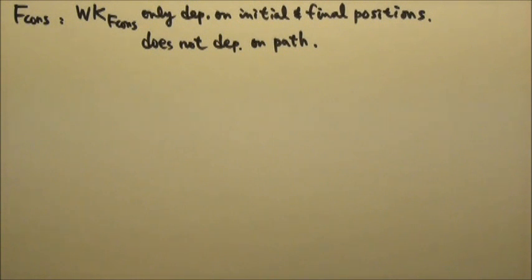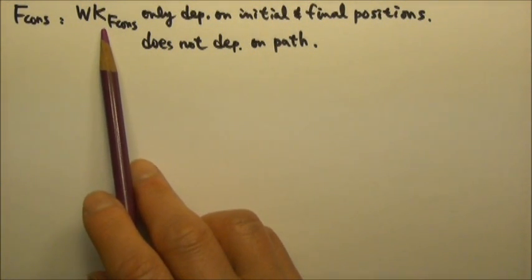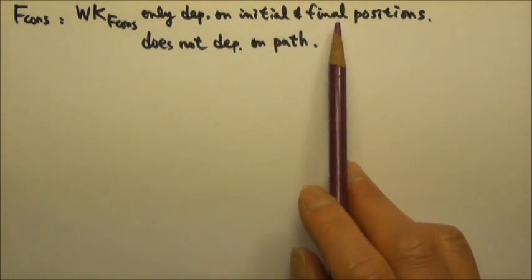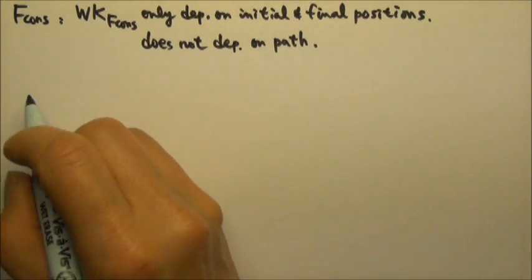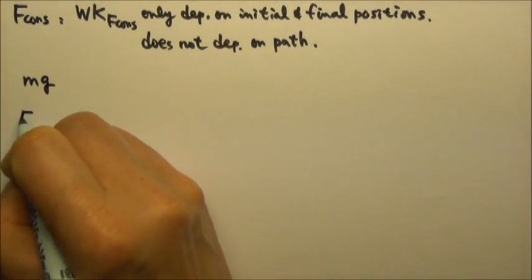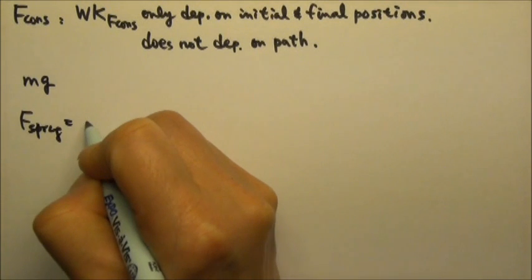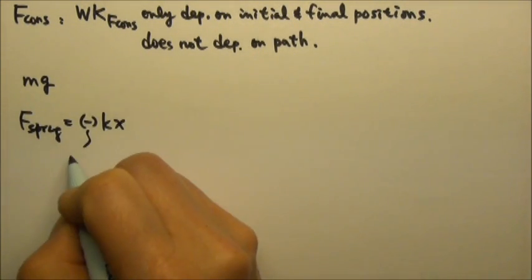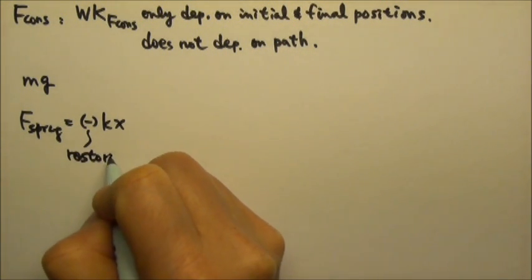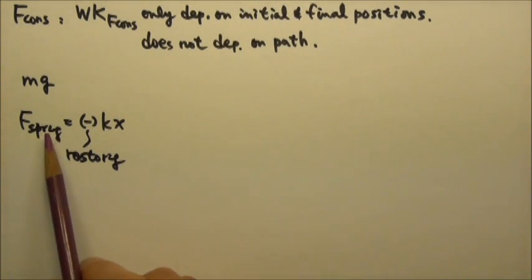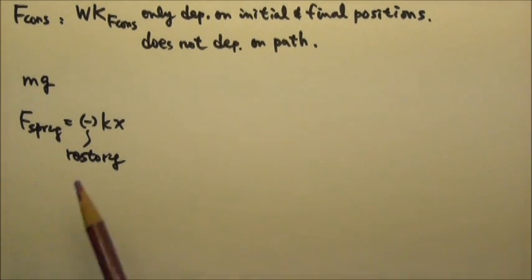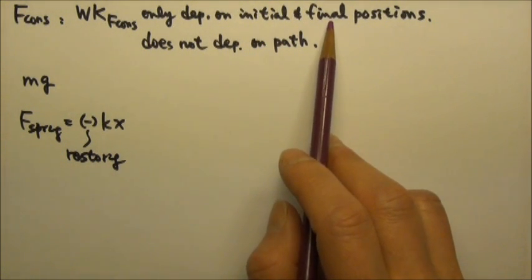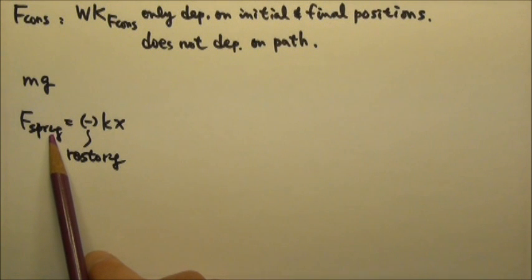In this unit, we categorize forces into conservative and non-conservative forces. What's special about a conservative force is that the work done depends only on the initial and final positions, not on the path taken. We learned about two conservative forces: the gravitational force mg, and the spring force F = −kx. The negative sign tells us the spring force is a restoring force, though in problem solving we typically use F = kx to find the magnitude.